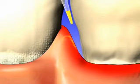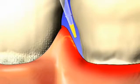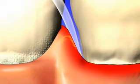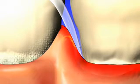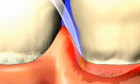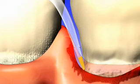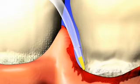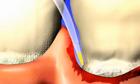Arestin, minocycline hydrochloride microspheres 1 mg, is delivered as a yellow powder in a single-dose, site-specific cartridge, which allows for easy placement directly to the base of the periodontal pocket.